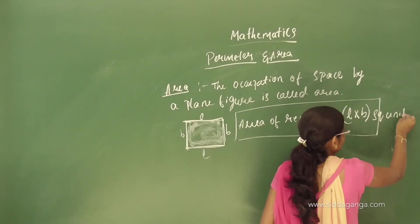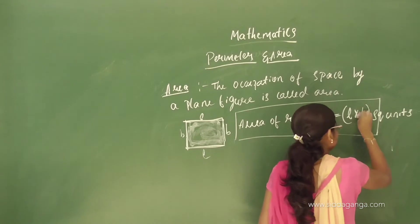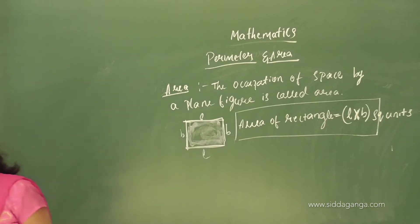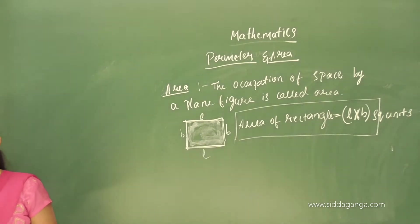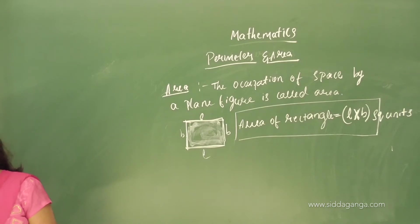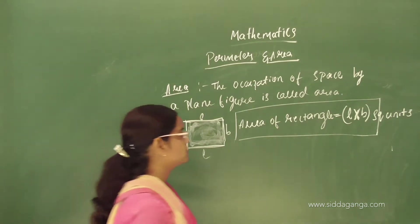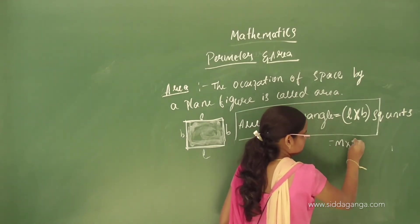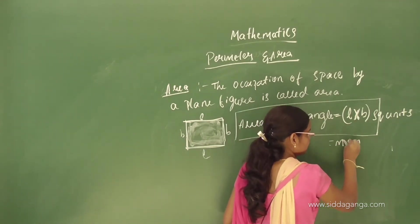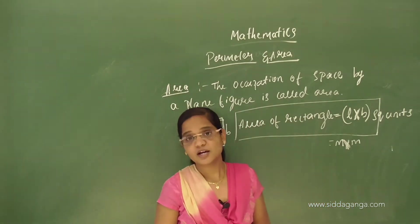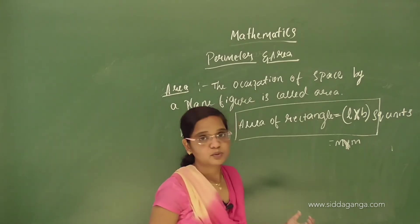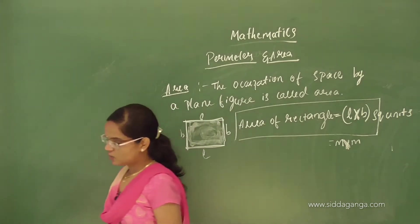When we multiply the same unit, for example length in meters and breadth in meters, we get square meters. That is why the unit becomes square units. This is the explanation for area of rectangle.